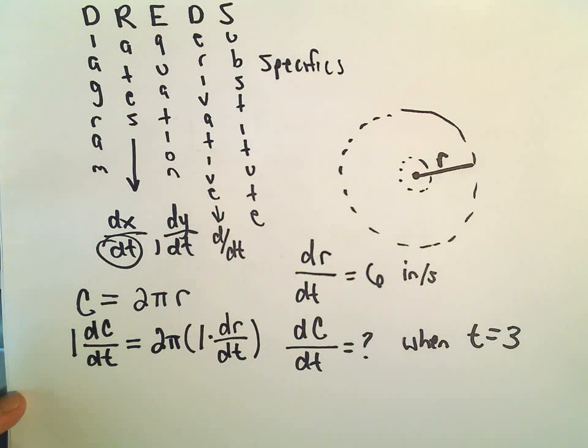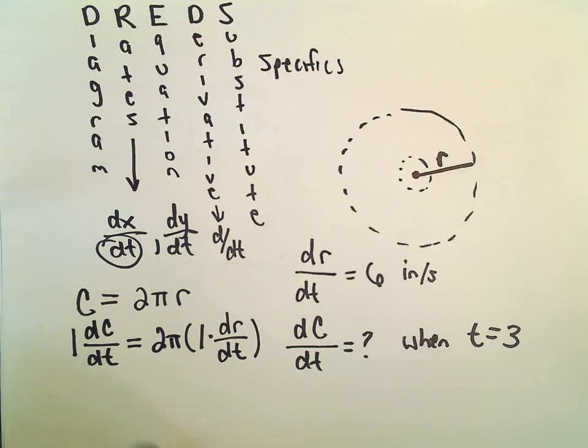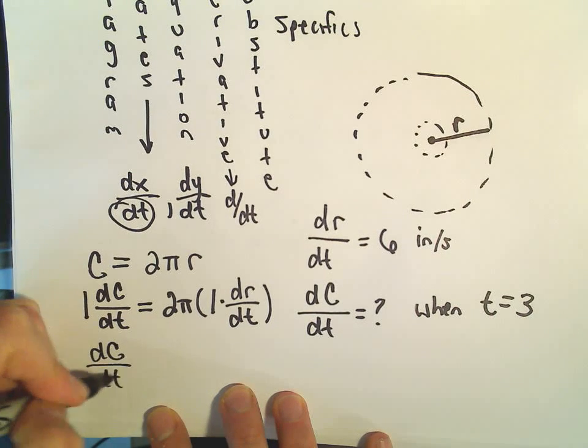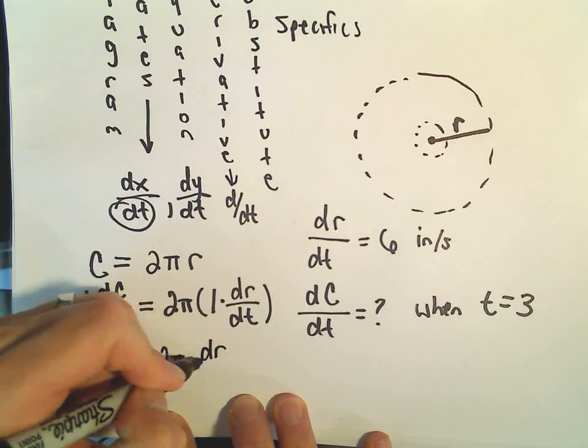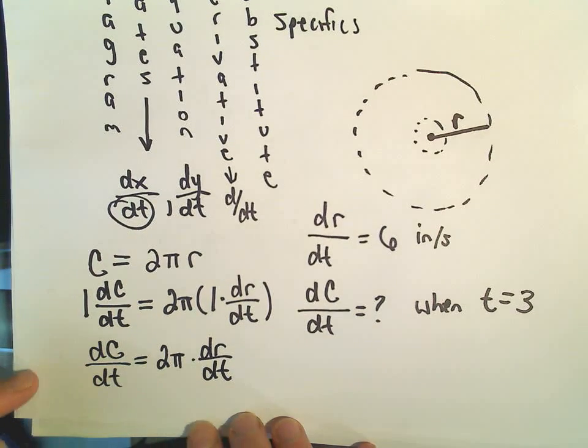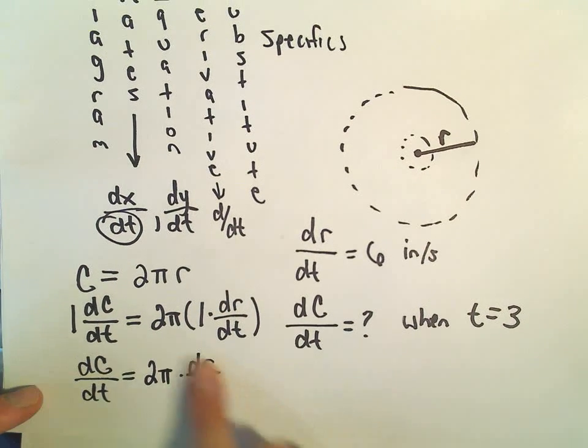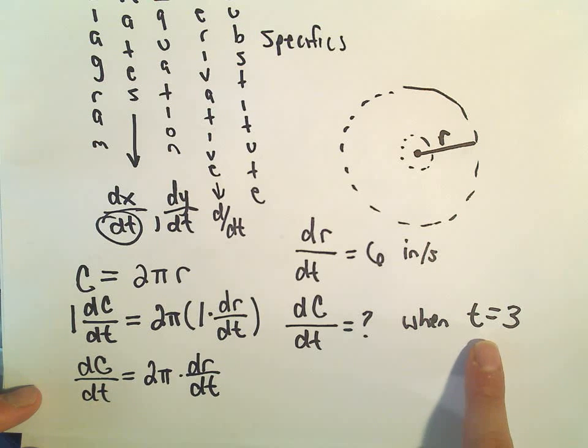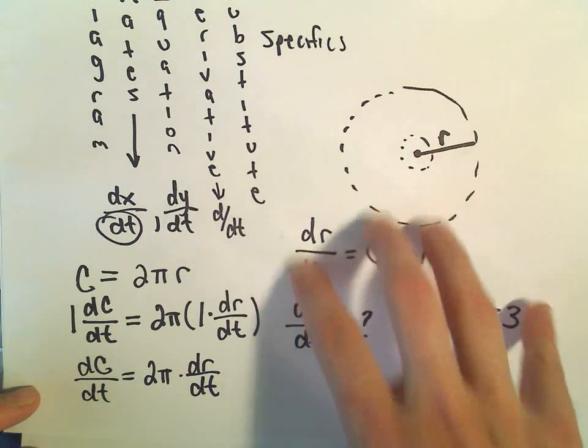Notice at the end of this problem, the question asked for what's the change in radius when t equals 3. Notice our derivative here, we have dc/dt equals 2π times dr/dt. And notice there's no t in this formula. So really what it says, it says the change in the circumference with respect to time, it's actually independent of the time. It doesn't really depend on sort of how long the ripple's been out there.